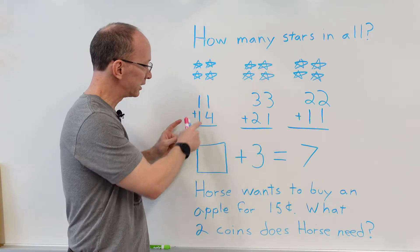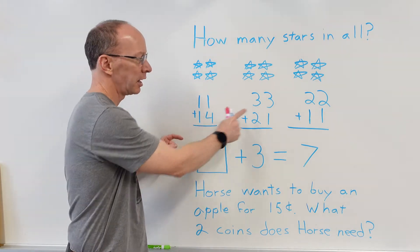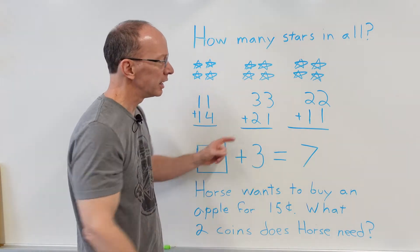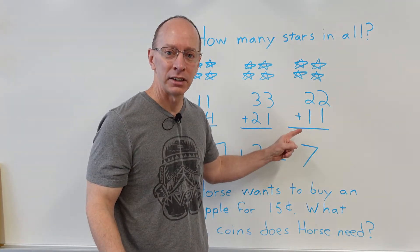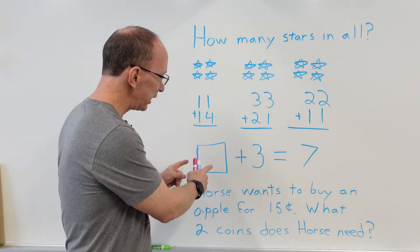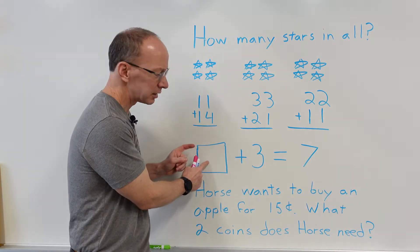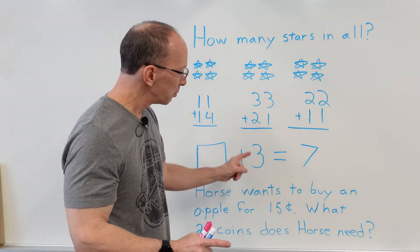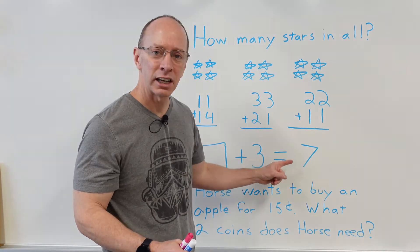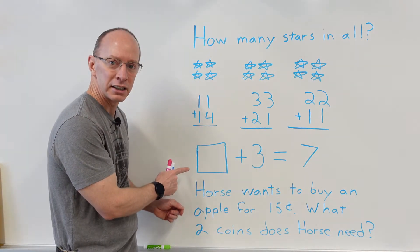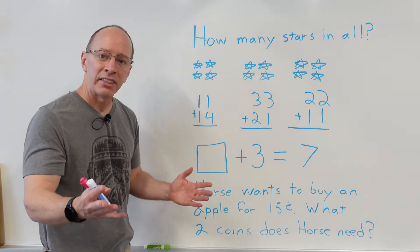The next problems that I want you to do are 11 plus 14, 33 plus 21, and 22 plus 11. And then down here I want you to go ahead and fill in this blank right here. There's some number right there plus three that equals seven, so see if you can figure out what goes in this blank right here.